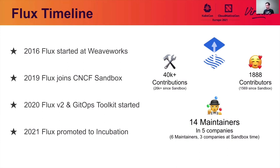With more organizations adopting GitOps and cloud-native technologies, and with Kubernetes evolving so fast, we've hit the limits of Flux's initial design. We realized that if we want to accommodate more features, help new contributors, and extend Flux easily, we needed to break the monolith into smaller independent components. So last year, we started designing a framework that we call the GitOps toolkit. This framework is the foundation on which we are building Flux version 2, the next major iteration of Flux.